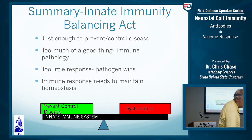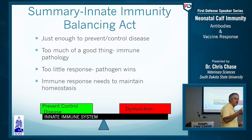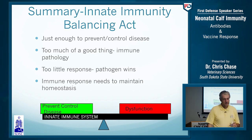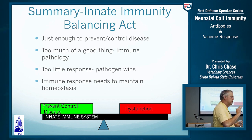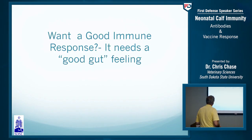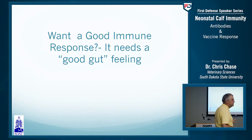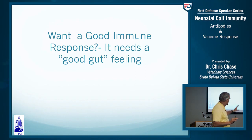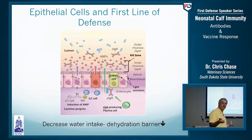The largest immune organ in the body is actually the mucosal cells lining the respiratory tract, the gut, and the female reproductive tract. We used to think of these cells as being in the secretion and absorption business, but they are in fact the largest immune organ in the body.